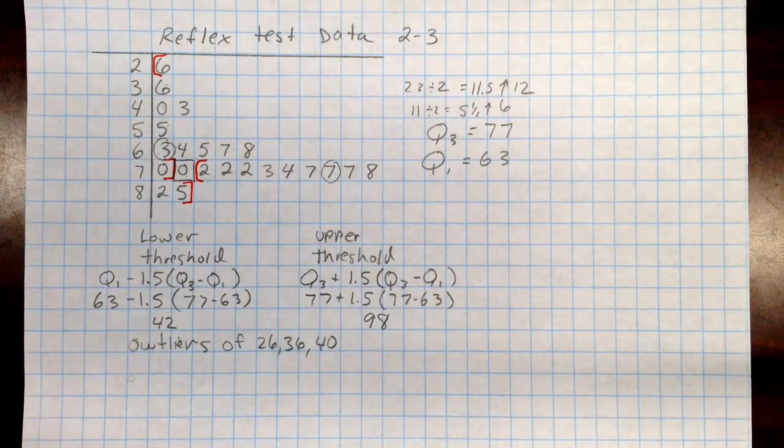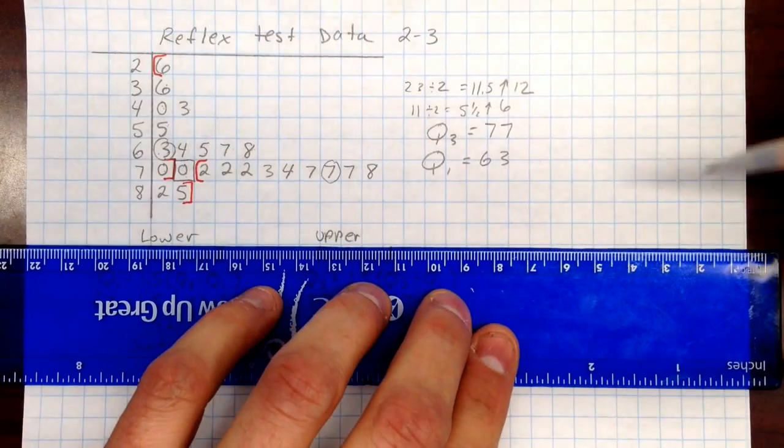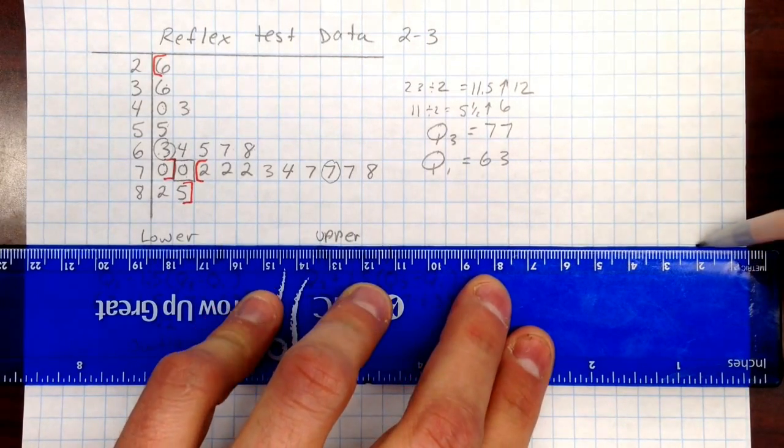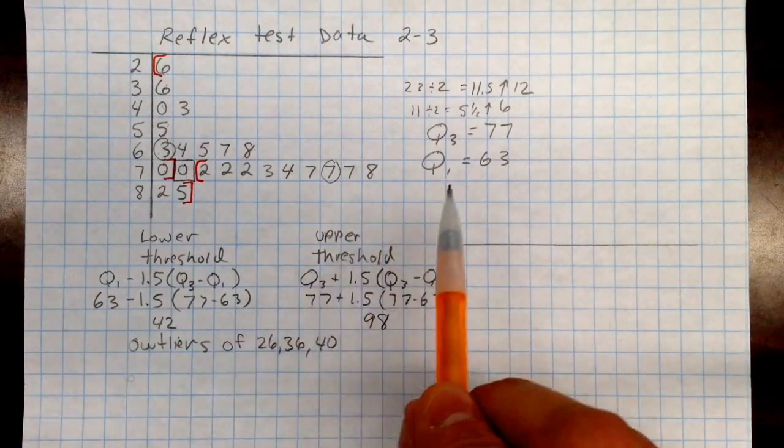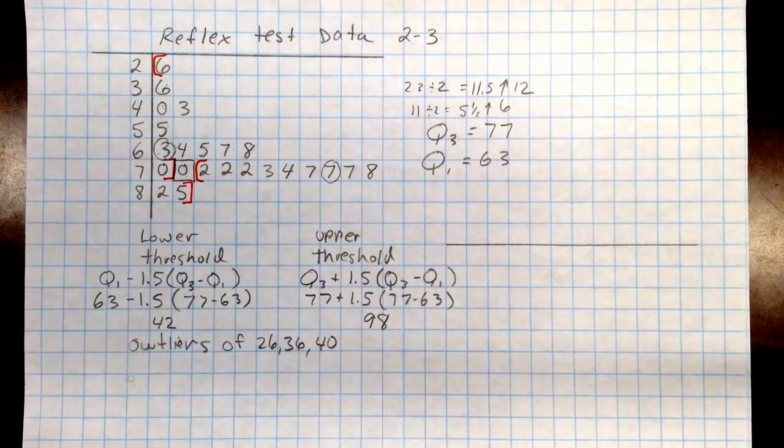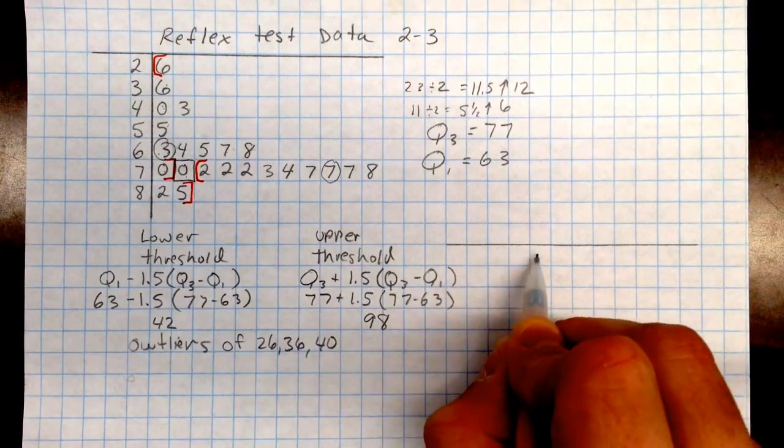As for making the box and whisker plot, we can squeeze that right in here on the side. So let's go right over here. Put a line down here so we can have something to go by. Looks like I have a range of 26 to 85, so I'm going to go 20 to 90. And I should be able to fit that in 20, 30, 40, 50, 60 pretty easily.